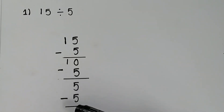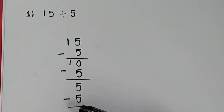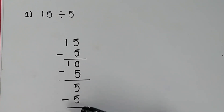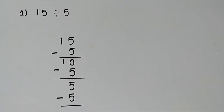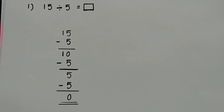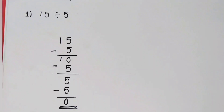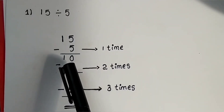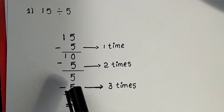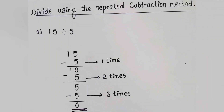Next we are going to subtract 5 from the answer, that means 5 minus 5. 5 minus 5 is equal to 0. So we reach 0. Now we count how many times we subtracted 5 from 15 to get 0: 1, 2, 3. We subtracted 5 from 15 three times, so our answer is 3. So 15 divided by 5 is equal to 3.